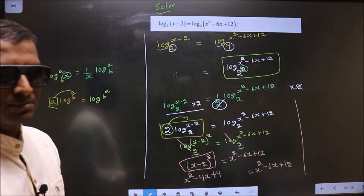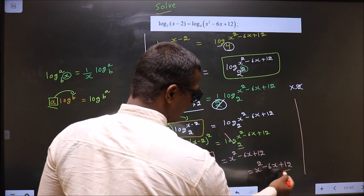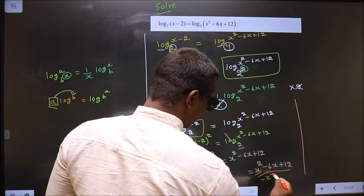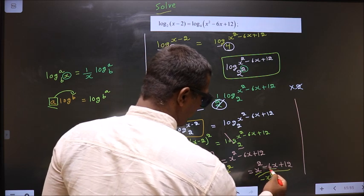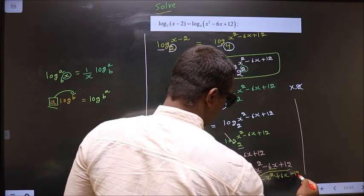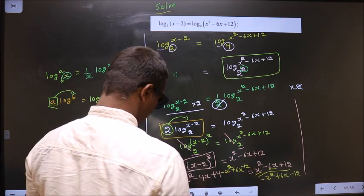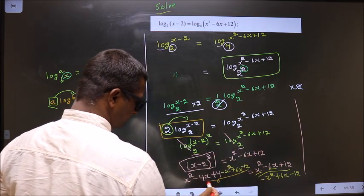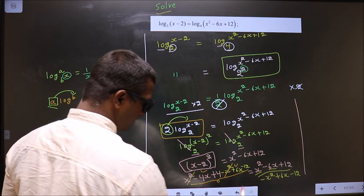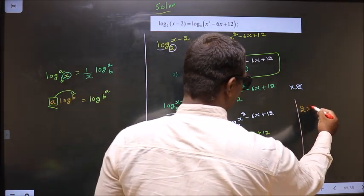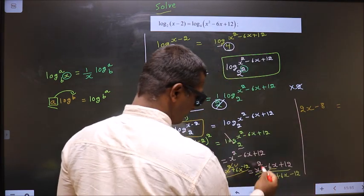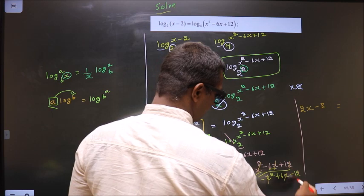Now take all terms to one side. Subtract x squared from both sides — x squared cancels. Add 6x to both sides: minus 4x plus 6x gives plus 2x. Subtract 12 from both sides: 4 minus 12 gives minus 8. On the right everything cancels, giving 0. So we have 2x minus 8 equal to 0.